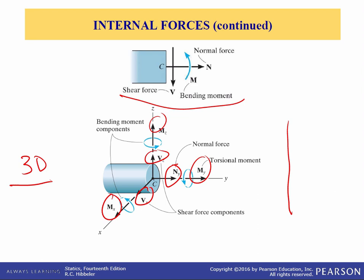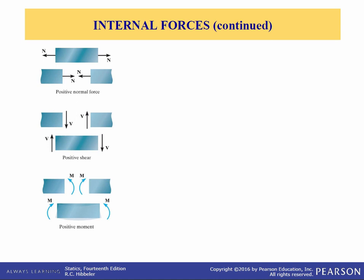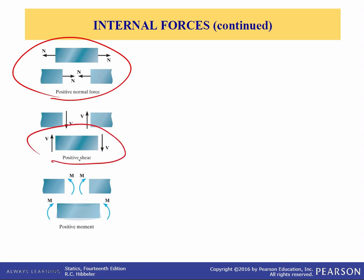For most applications, these resultant loadings occur at the geometric center or centroid of the cross-section. Now let's establish a sign convention — back in two dimensions. This sign convention is arbitrarily assigned, but widely accepted. The normal force is positive if it creates tension. A positive shear force causes the segment on which it acts to rotate clockwise. And a positive bending moment tends to bend the segment into a concave upward shape.